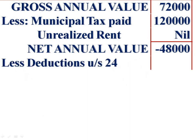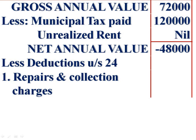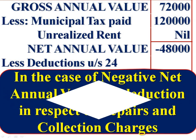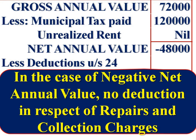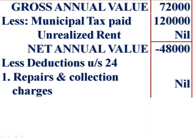From this net annual value, deduct deductions under Section 24. There are two deductions. First, standard deduction in respect of repairs and collection charges — 30% of net annual value is deductible. But in this problem the net annual value is negative, so there is no deduction in respect of repairs and collection charges. Therefore, repairs and collection charges: nil.